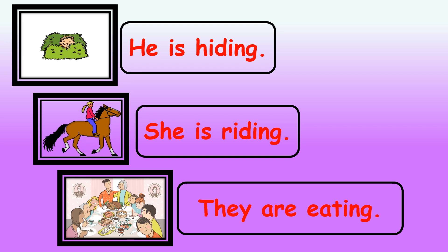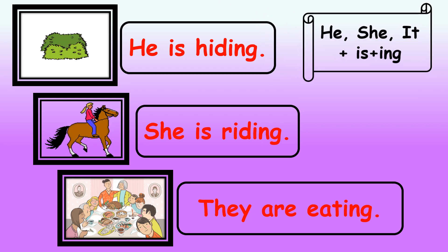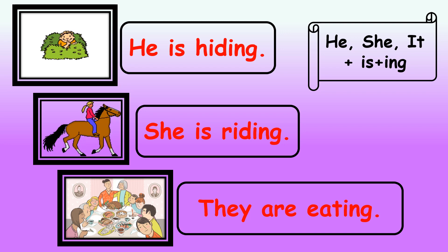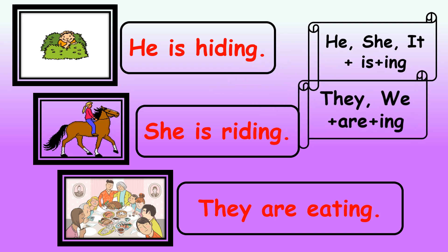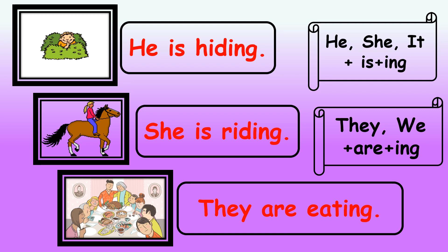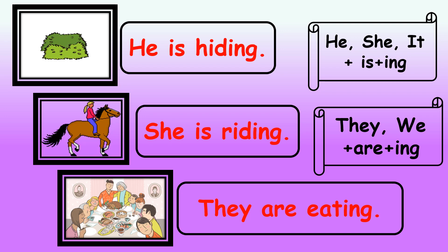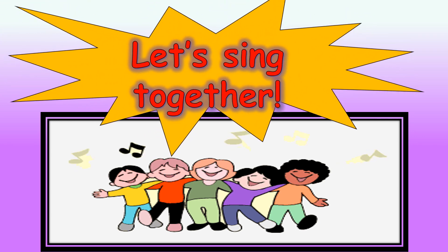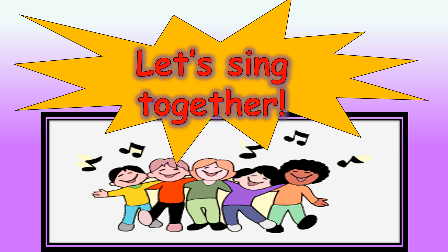Always remember: if the subject is he, she, or it, you will use 'is' plus the verb with -ing. If the subject is they or we, you will use 'are' plus the verb with -ing. Okay children, before we proceed in our discussion, let's sing together.